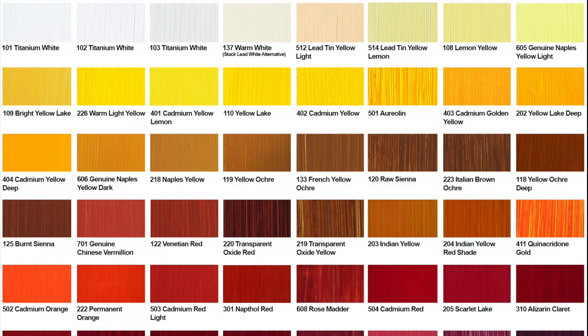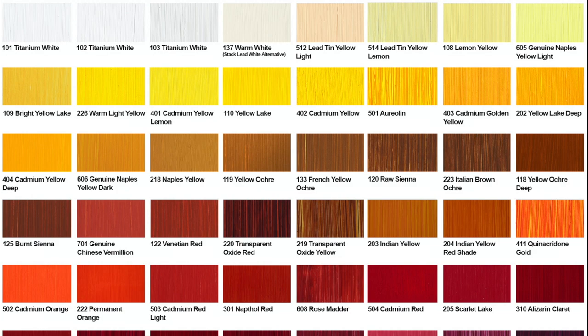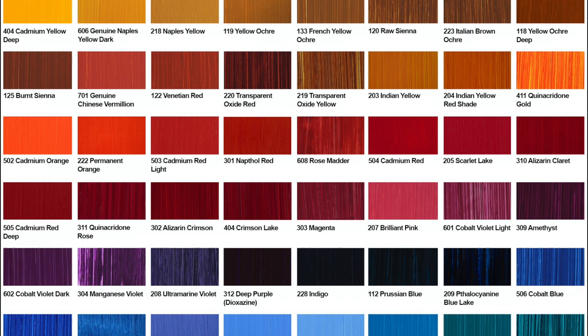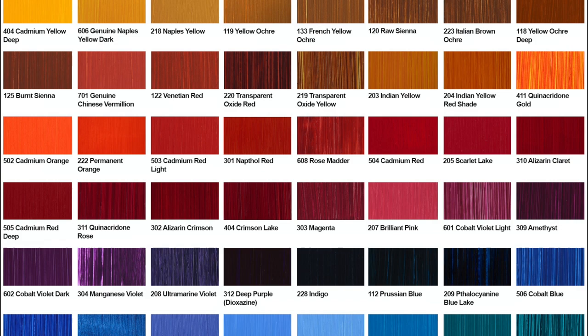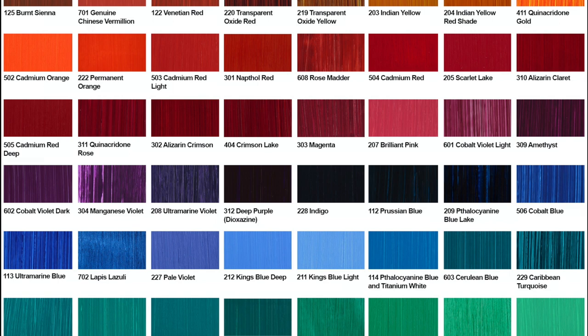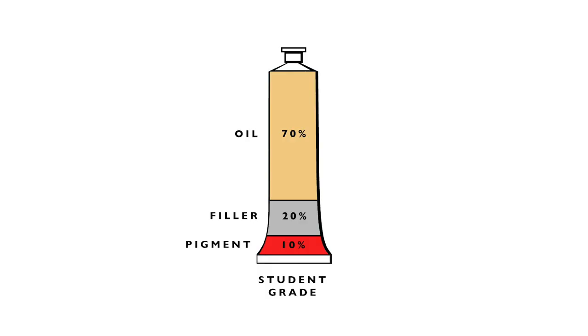The pigments we use to make oil paint come from a wide range of sources — animal, vegetable, mineral and synthetic. Some pigments, like earth colours which are literally made of mud, are really cheap. While others, rare metals like cadmium and cobalt, are very expensive.